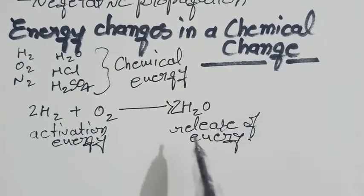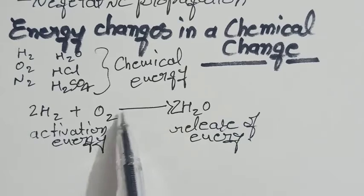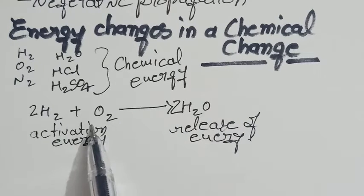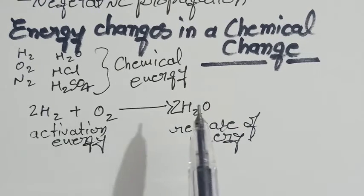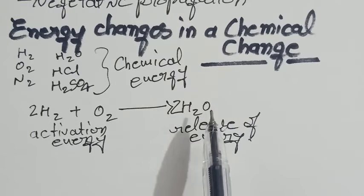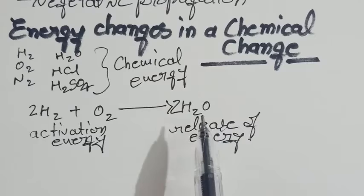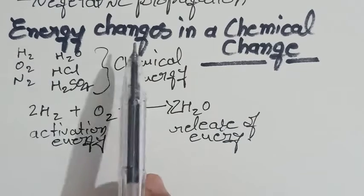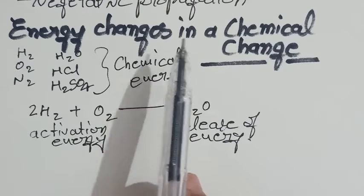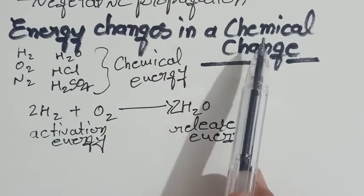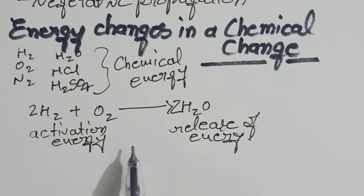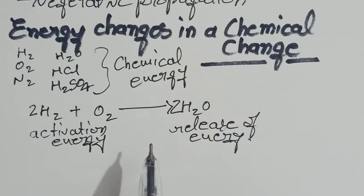The difference between the chemical energy of the reactants and the chemical energy of the products is called the energy change in a chemical reaction.